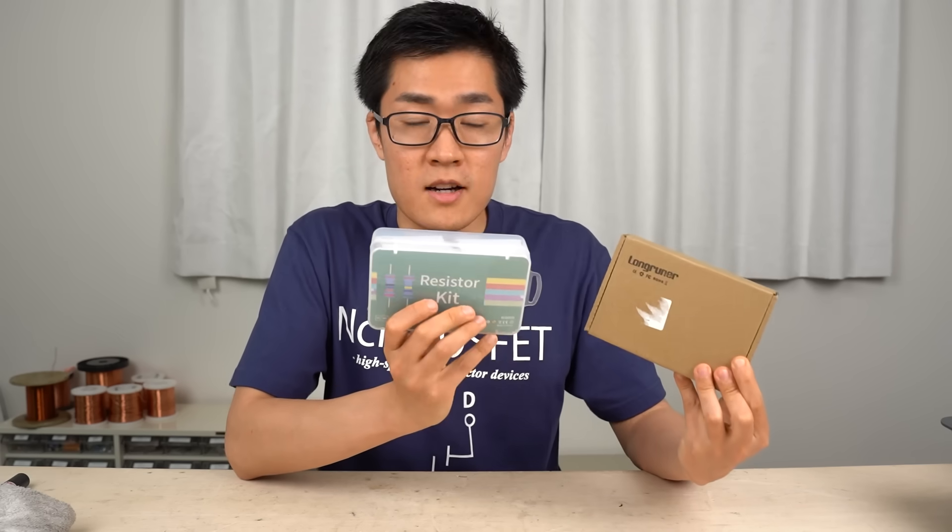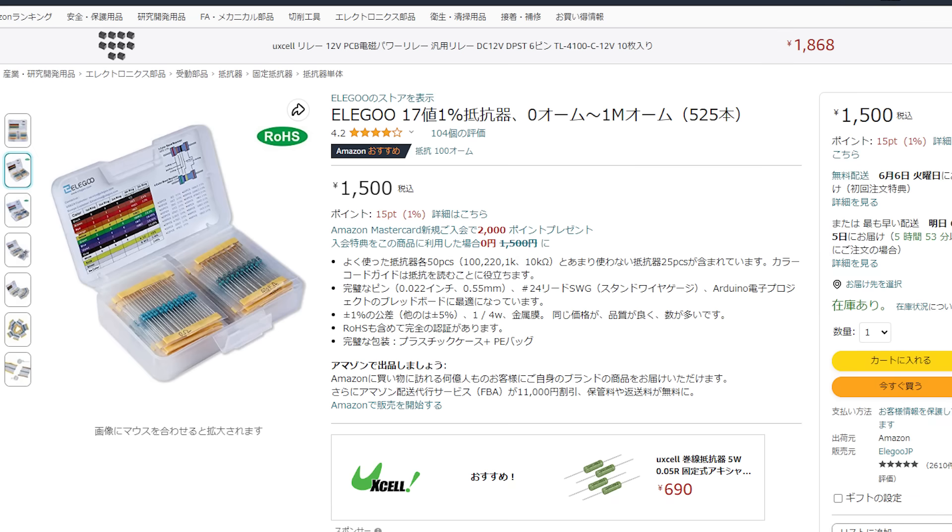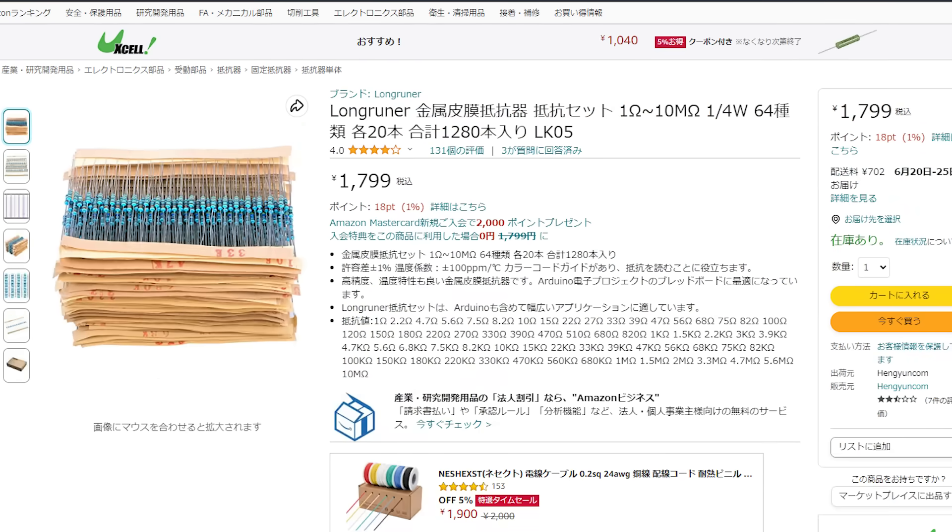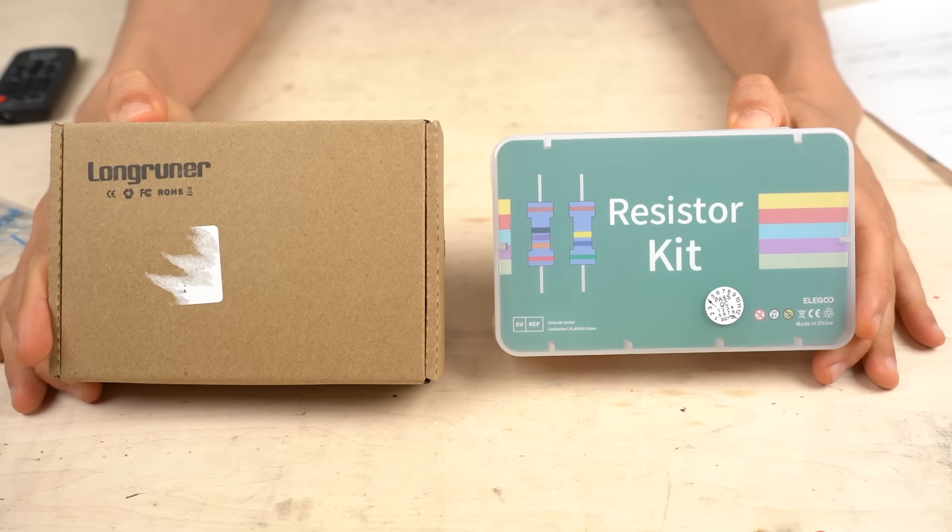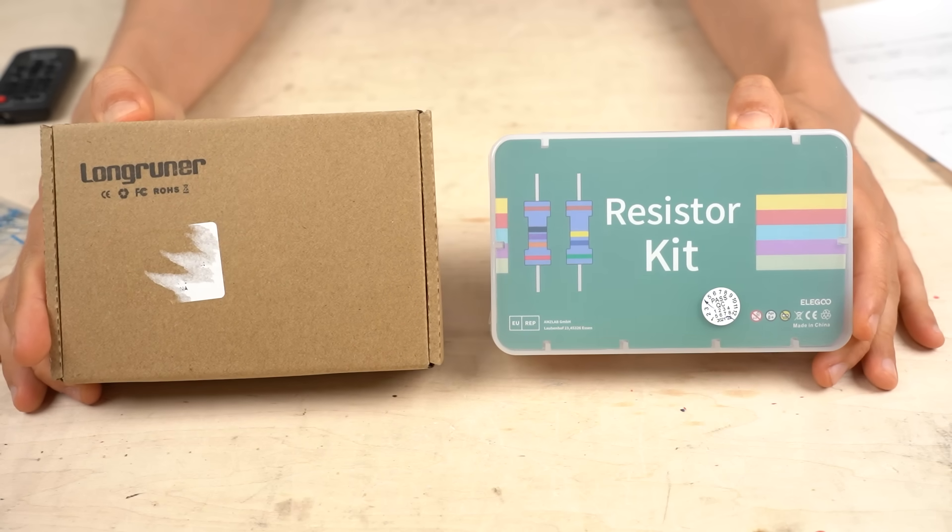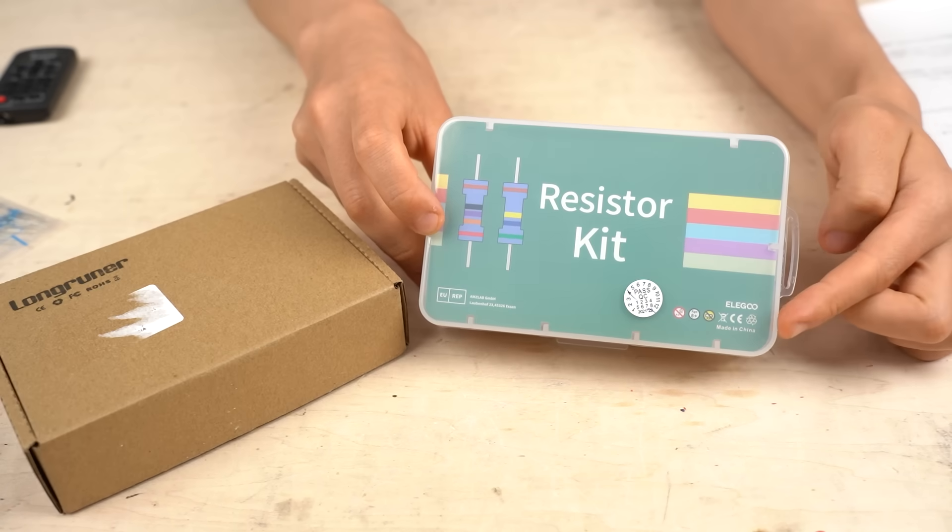I picked up two sets of resistors with good reviews on Amazon. Let's see the quality of these two. I picked up products from two companies so I can get more reliable results. This is from Longruner, and this is from Elegoo.